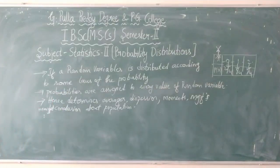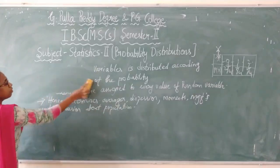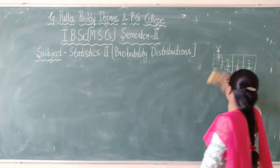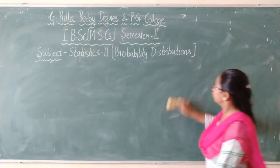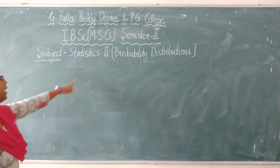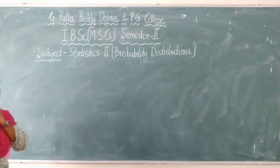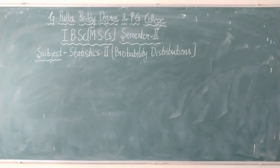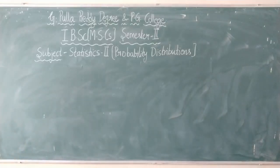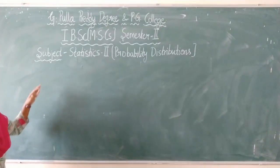Now I will give you the syllabus. First write down the syllabus on the first page, then coming to unit 1, write the introduction part about probability distributions. In the second semester, same as the first semester, we are having a total of 4 units.